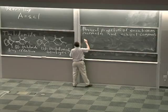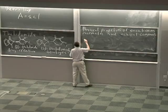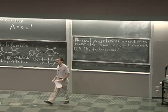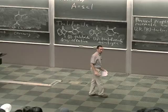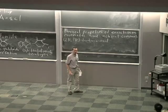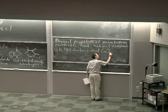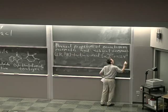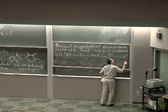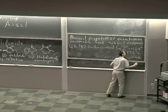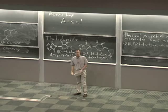2R,3R tartaric acid is the natural isomer. Its specific rotation — the degree to which it rotates plane polarized light — is alpha_D at 20°C equals positive 12.4 degrees. The melting point of 2R,3R tartaric acid is 172 degrees Celsius.